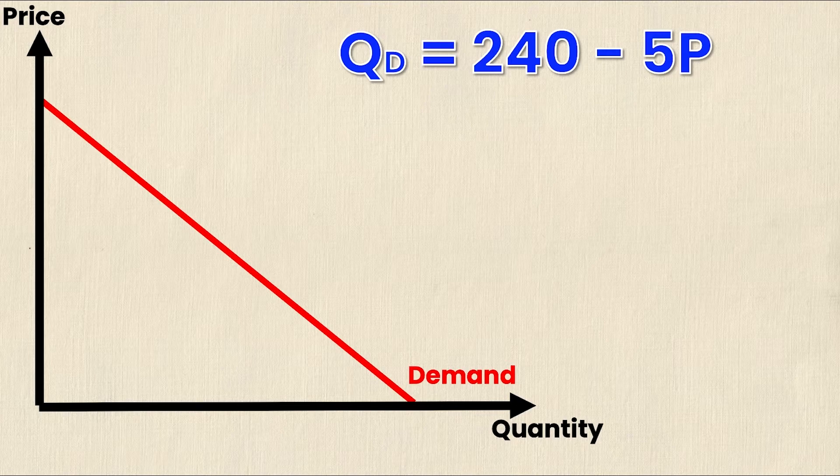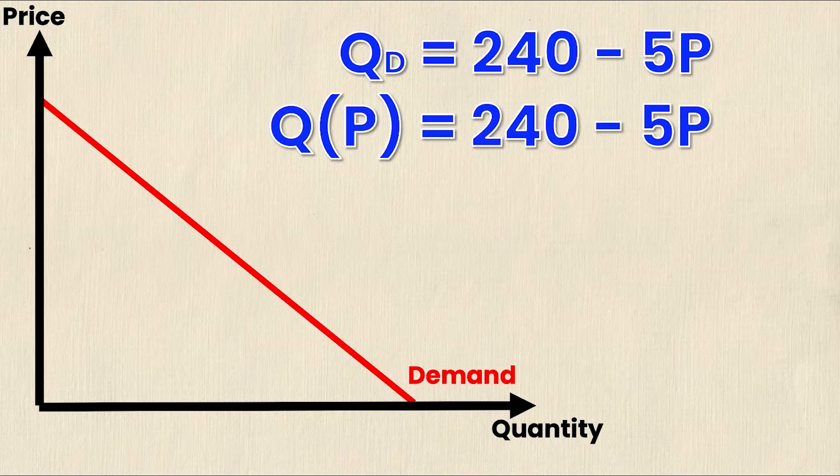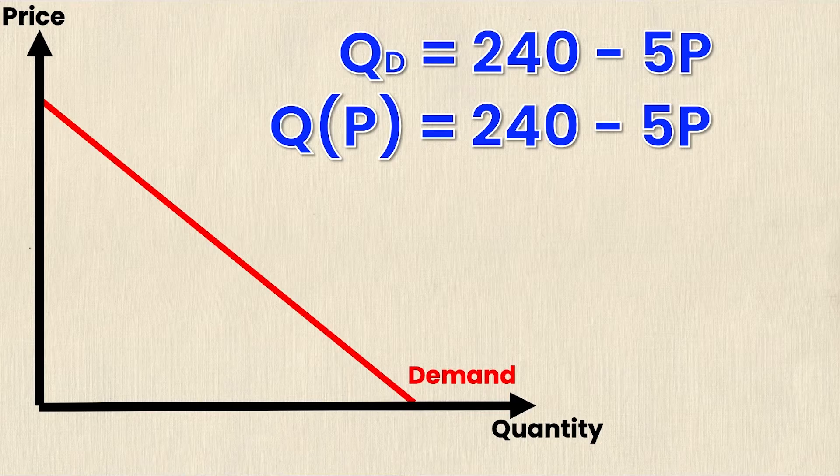This is just a linear equation, hence why a demand curve is linear in this case. If I wanted to write that in functional notation, then it would be Q(P) equals 240 minus 5P. That is not multiplication happening on the left side, that's just functional notation. Q is a function of P, meaning Q is the dependent and P is the independent variable.